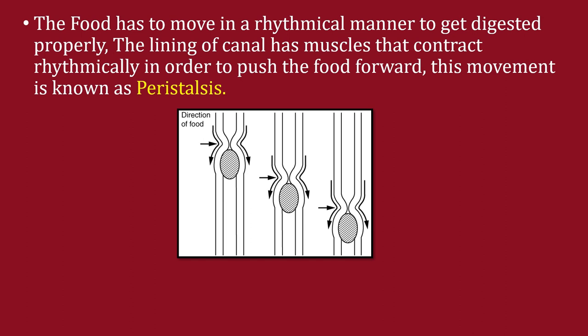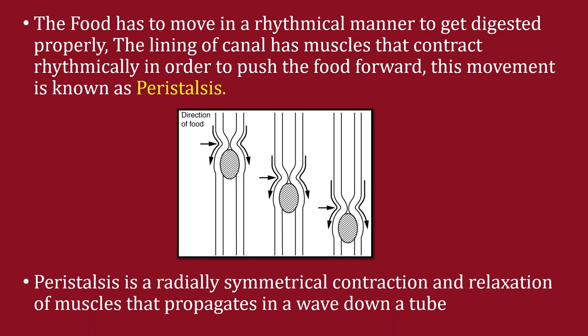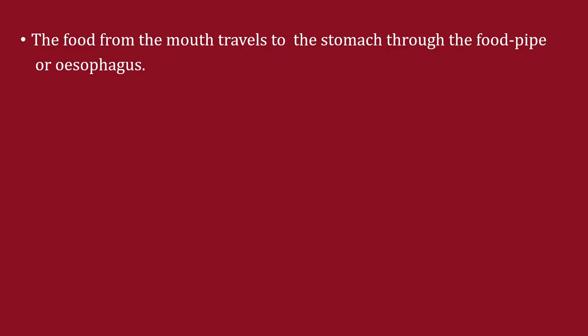Looking at the diagram, you can see food here with contracted muscles. As food moves down, the muscles continue to contract and the previously contracted muscles relax. This movement is called peristalsis — a radially symmetrical contraction and relaxation of muscles that propagates in a wave down a tube.